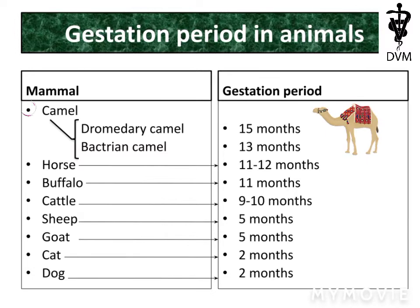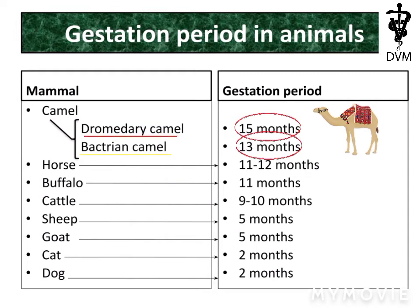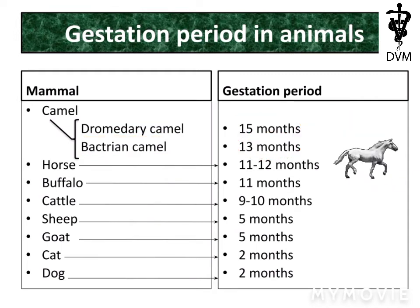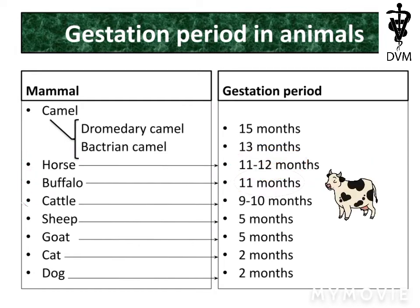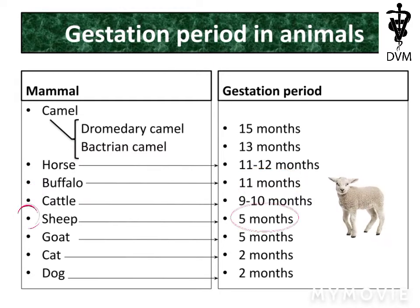The camel has three species. The gestation period of the dromedary camel is 15 months, and the Bactrian camel is 13 months. The gestation period of the horse is 11 to 12 months, buffalo 11 months, cattle 11 to 12 months, sheep five months, and goat five months.